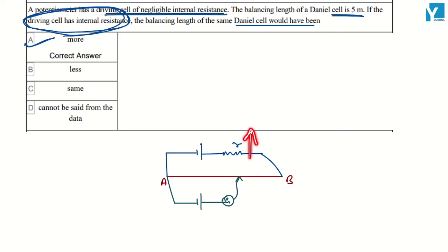What will the value be with this resistance? The voltage difference between A and B will be less than the voltage difference without resistance, and the balancing length will be less.